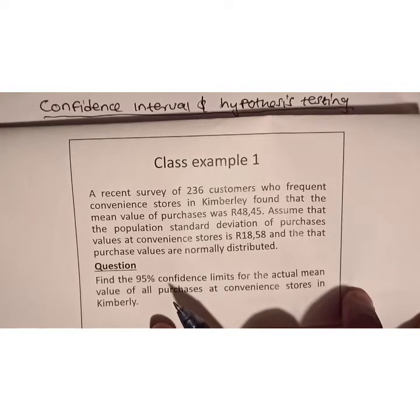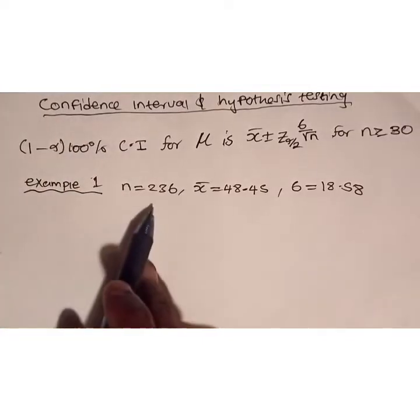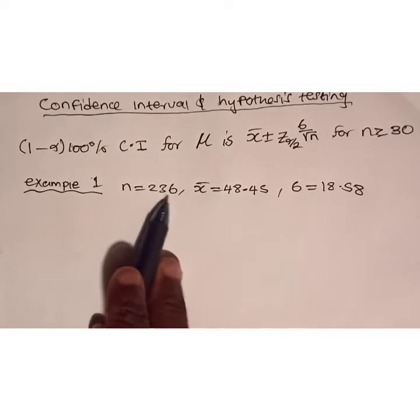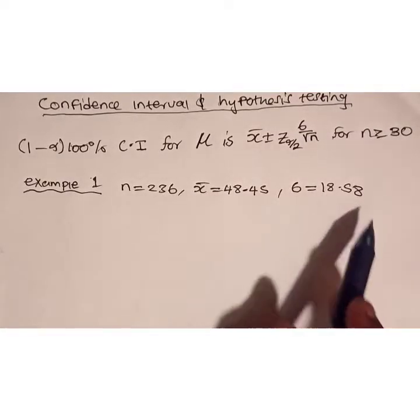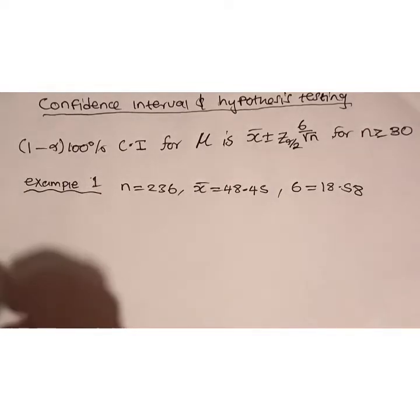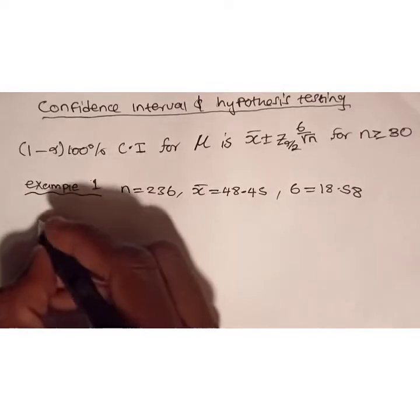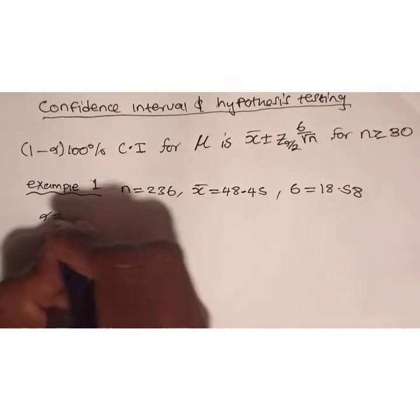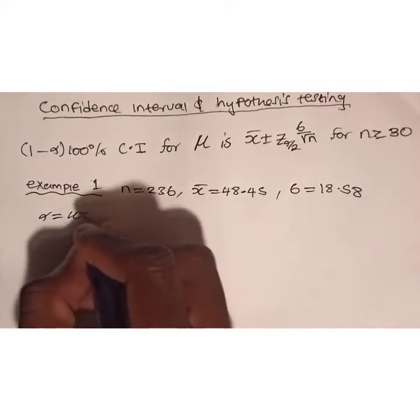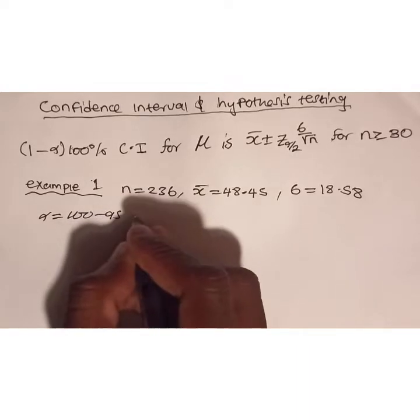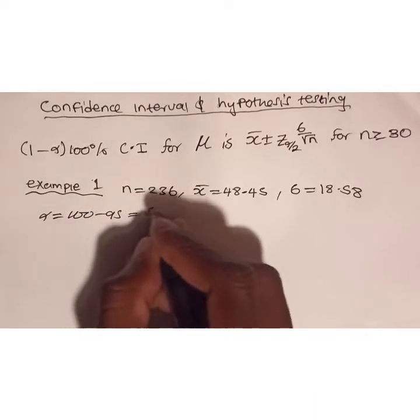We have a sample size of 236 and we have sigma, so we're going to use that. Our alpha, since it's a 95% confidence interval, is given by 100 minus 95, which is just 5%.